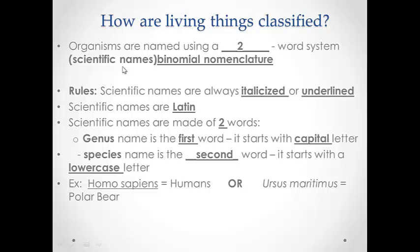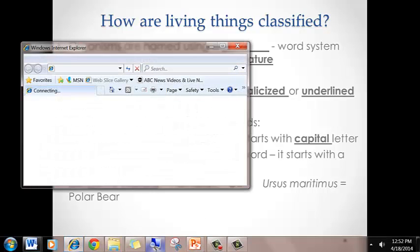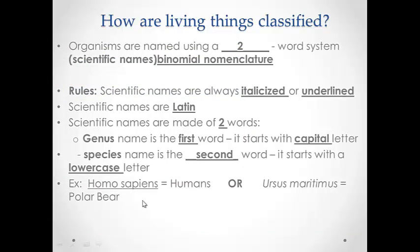Here are the rules for the binomial nomenclature. Scientific names are always italicized or underlined. Names are Latin-based. Scientific names are made of two words. A genus name is the first word, it starts with a capital letter. And the species name is the second word, it starts with a lowercase letter. For example, our common name is humans, and our scientific name is Homo sapiens.